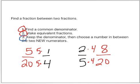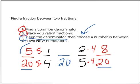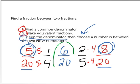Step number three, keep the denominator. Since I made the denominator a twenty, we're going to keep the twenty. Now I get to choose a number between my new numerators. Choose a number between five and eight. I'm going to choose the number six. My answer in the middle is six-twentieths.